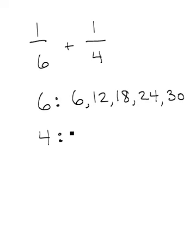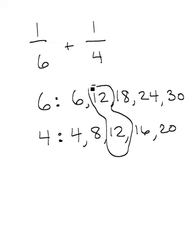Now I'll do the same thing for 4. I'll have 4, 8, 12, 16, 20 and so on. I'm going to look at both lists and I'm going to see right away that my first one I have in common is the number 12. We would call 12 the least common multiple between these two denominators.